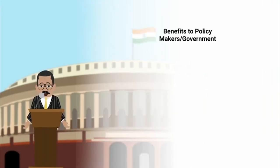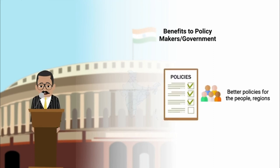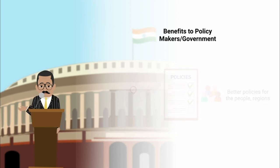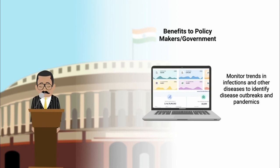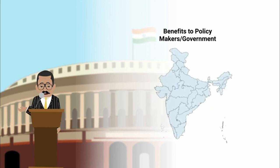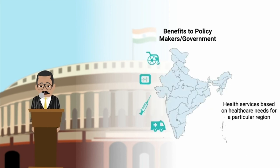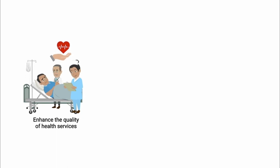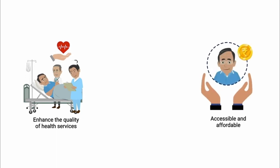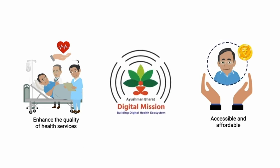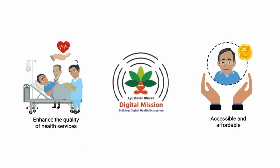Benefits to policy makers or government: the government can have more focused and better policies for the people and regions with the availability of relevant data. Government can monitor trends in infections and other diseases to identify disease outbreaks and pandemics, and ensure the availability of health services based on healthcare needs for a particular region. To enhance quality, accessibility, and affordability of health services, the Government of India has introduced Ayushman Bharat Digital Mission, ABDM.